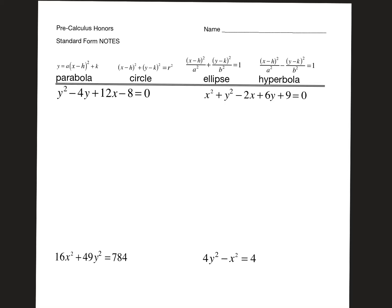This video is on standard form. The goal today is for you to look at an equation — there are four different equations on the sheet on your screen — and be able to tell what it is: a parabola, a circle, an ellipse, or a hyperbola. Then get it into the right form so you can graph it and name all the different parts. Two of these are really easy to identify and the other two take a little finesse.